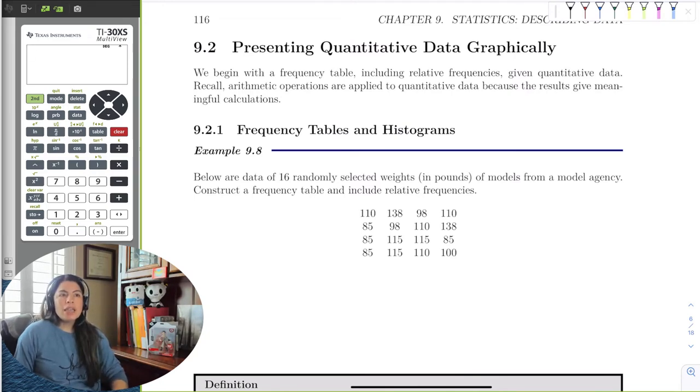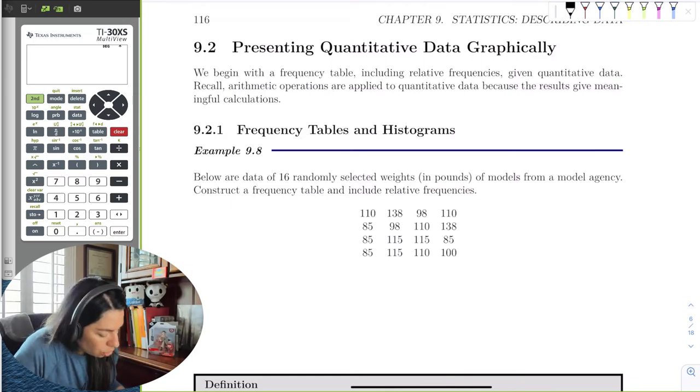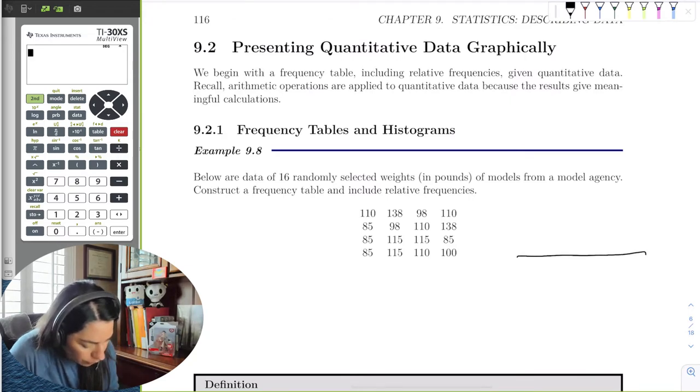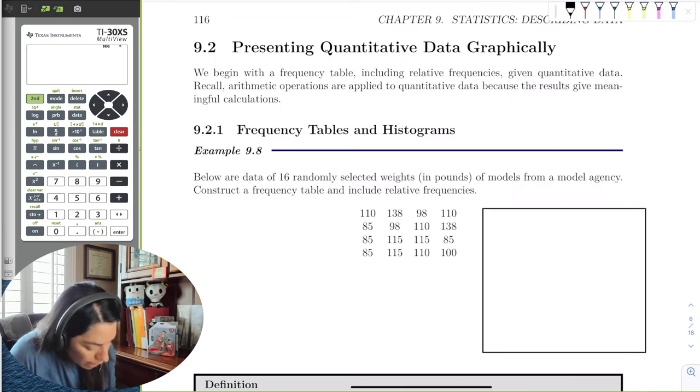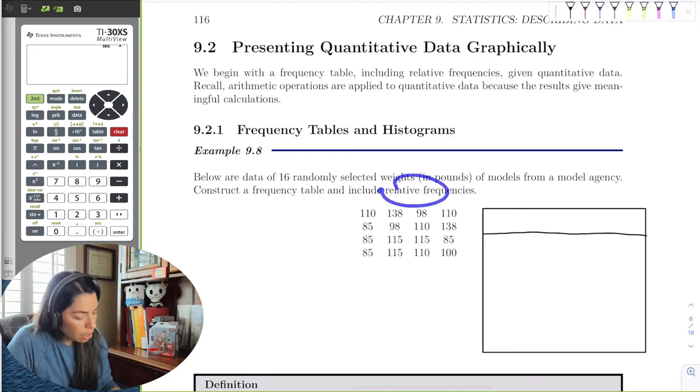So I just went ahead and gave 16 randomly selected weights in pounds of models from a generic model agency. The first type of thing we're going to visualize is a table. We have a frequency table. So we can actually construct a frequency table for quantitative data too. So the first thing we want to do to make a frequency table is to go ahead and have a rectangle. You want a header.